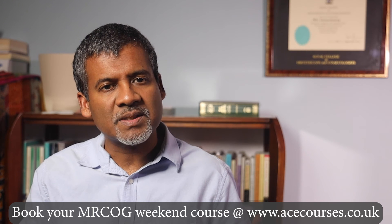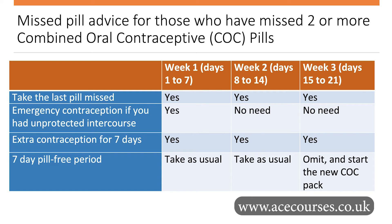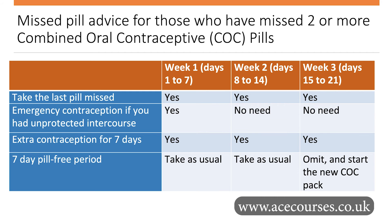If she has missed two or more pills — that is, two to seven pills anywhere in the pack, or started the new pack two or more days late — then contraceptive effectiveness cannot be guaranteed. What she needs to do depends on how far into the pack she is. She needs to make three important decisions: first, is emergency contraception needed? Second, is extra contraception needed? And third, what should she do with the pill-free period? A reference table is provided — it is strongly recommended to take a screenshot and commit this to memory.